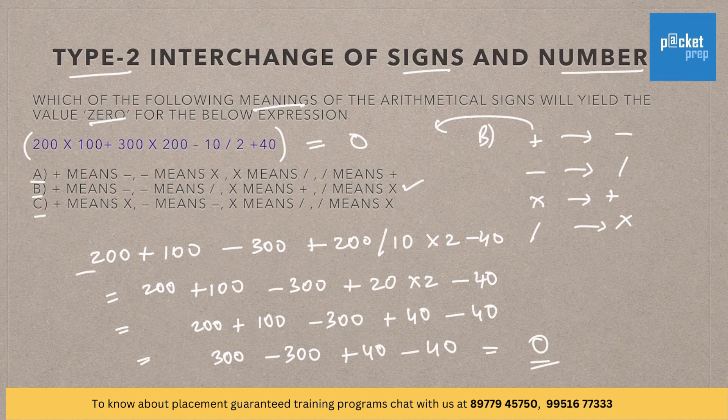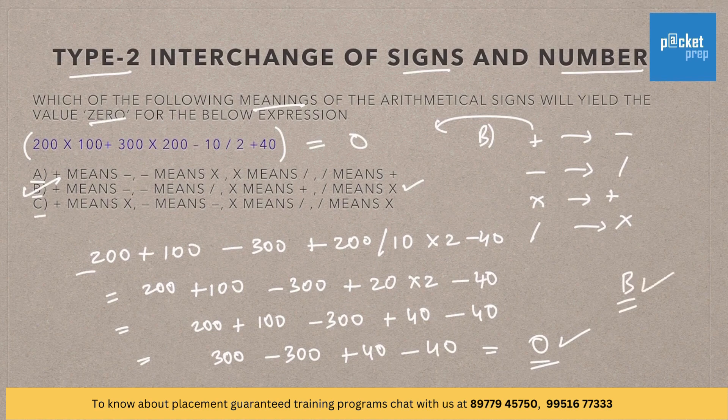So option B will give us the answer as 0. Therefore, option B is the correct answer.